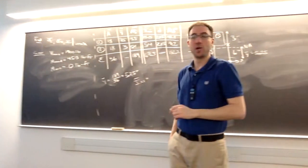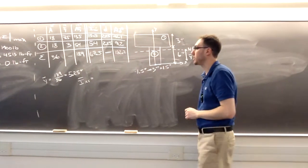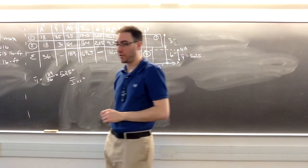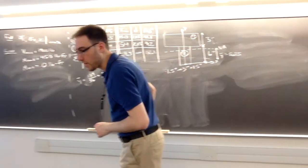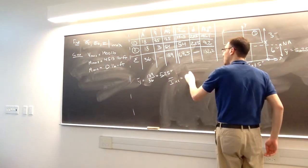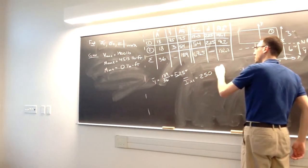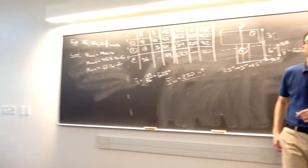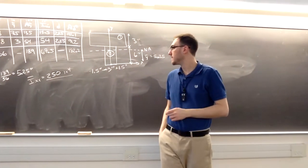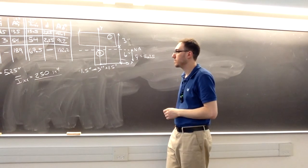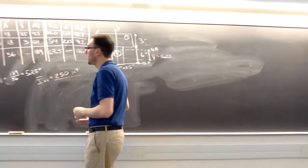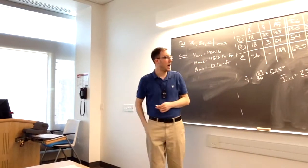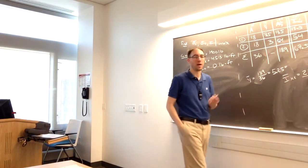So the total moment of inertia for the cross-section will be 67.5 plus 182.2, which is about 250 inches to the fourth power. This was all just to find the moment of inertia of this T-shaped cross-section.